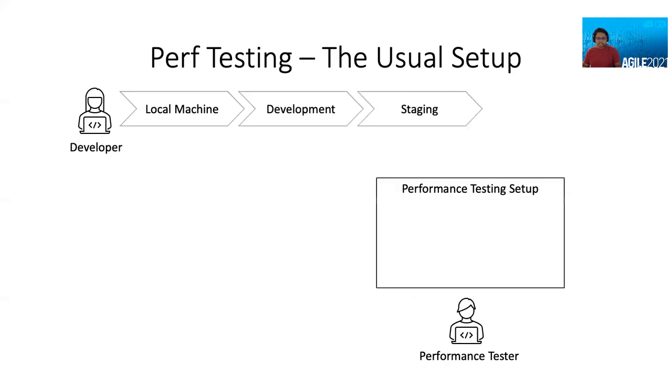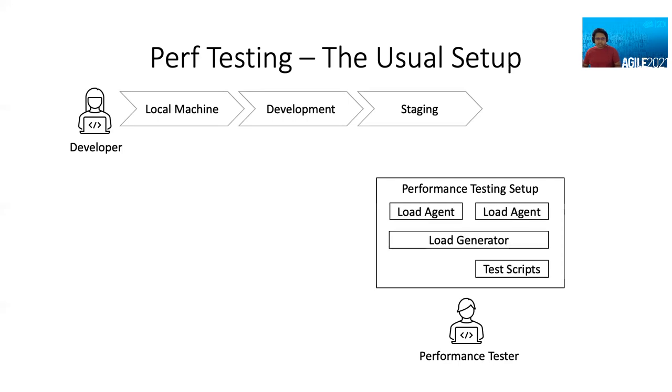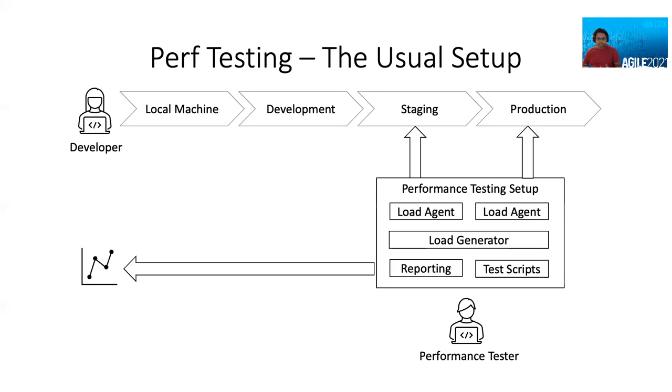Let's take a look at the usual setup of performance testing. The developer writes some code on her local machine, goes through the development environment, staging, and at this point the performance tester comes in, starts setting up the perf test environment. And what does that involve? Writing test scripts, setting up the load generator, the agents, etc. Start sending out the load, maybe for staging, and maybe even to production. Once the tests are done, you generate report, you share it to the team, developer makes sense out of it, and then ultimately starts trying to fix them.